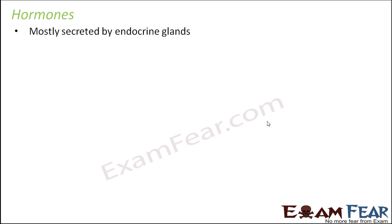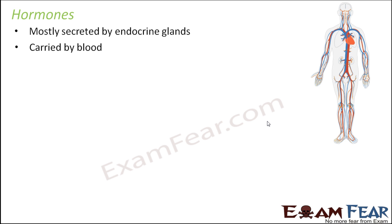So let us see what hormones are. Now these are mostly secreted by endocrine glands. I would not say that hormones are only secreted by endocrine glands, because any chemical which can perform the role that a hormone performs can be called a hormone. So it is not necessary that only endocrine glands can produce hormones. Most hormones are secreted by the endocrine glands, and they are carried by blood. Endocrine glands put their secretion directly into the blood, and then blood, being the circulatory medium, will carry it throughout the body.